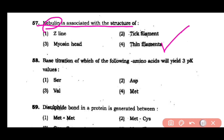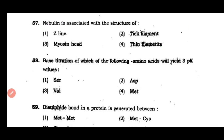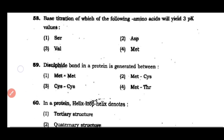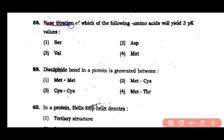Question number 58: Base titration of which of the following amino acids will yield 3 pK values? The correct answer is option 3.